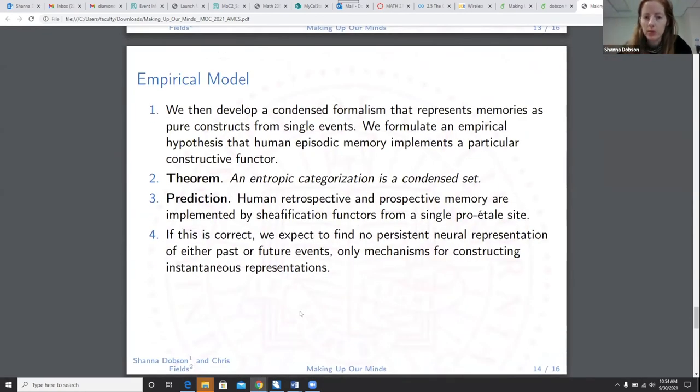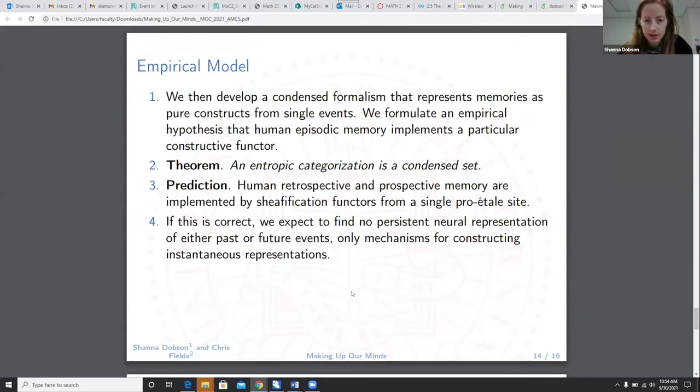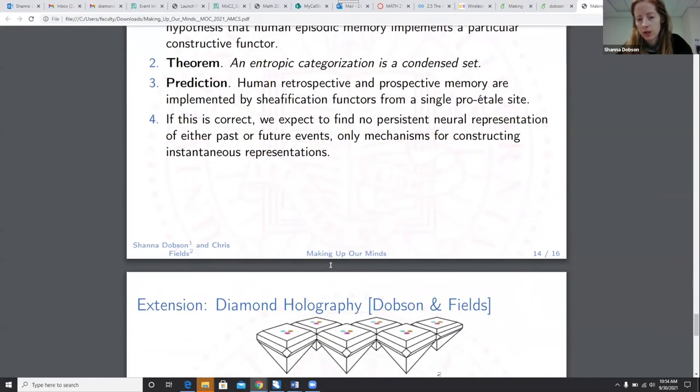So we then take this and we develop a condensed formalism that represents memories as pure constructs from single events. We formulate an empirical hypothesis that human episodic memory implements a particular constructive functor. An entropic categorization is a condensed set. We have a prediction. Human retrospective and prospective memory are actually implemented by sheafification functors from a single pro-étale site. If this is correct, we expect to find no persistent neural representation of either past or future events, only mechanisms for constructing instantaneous representations.